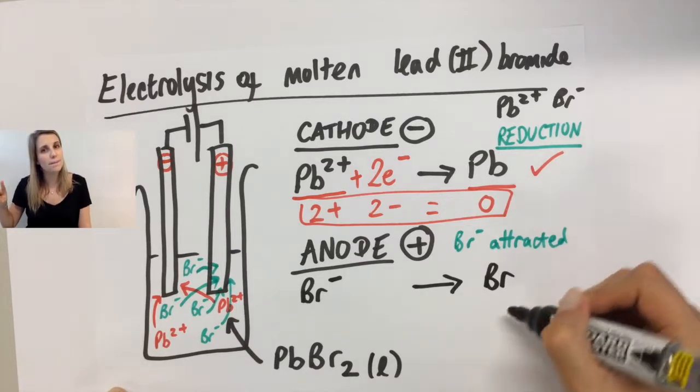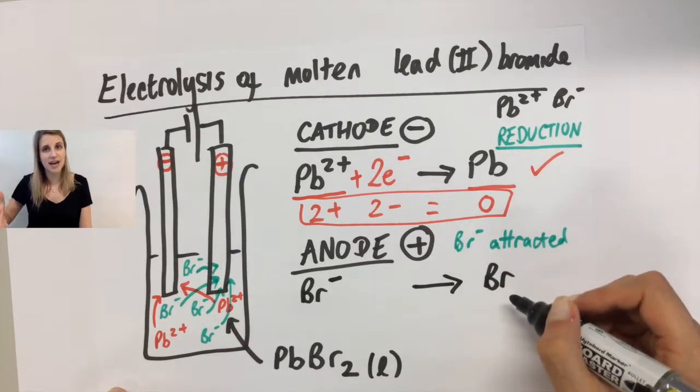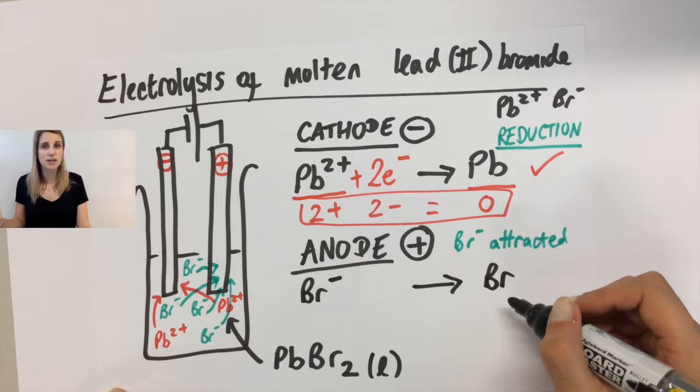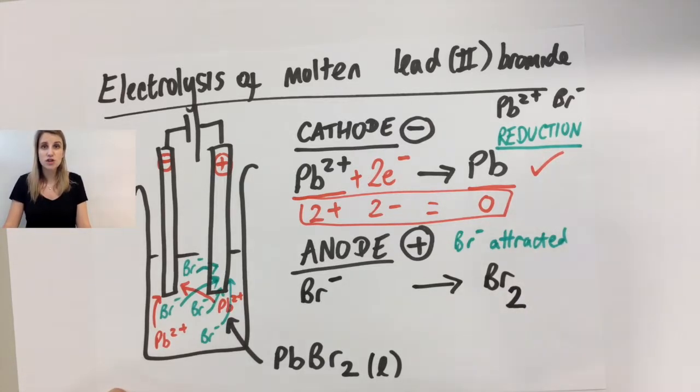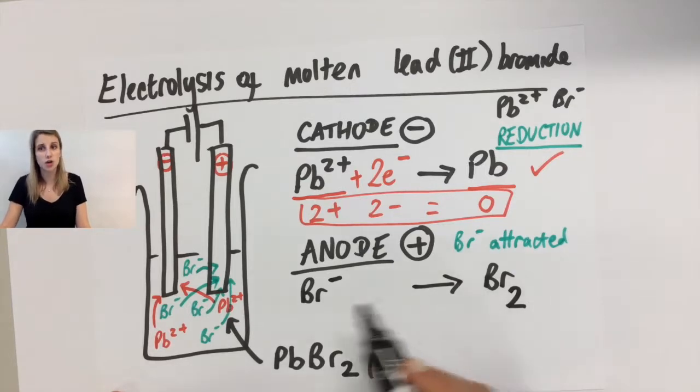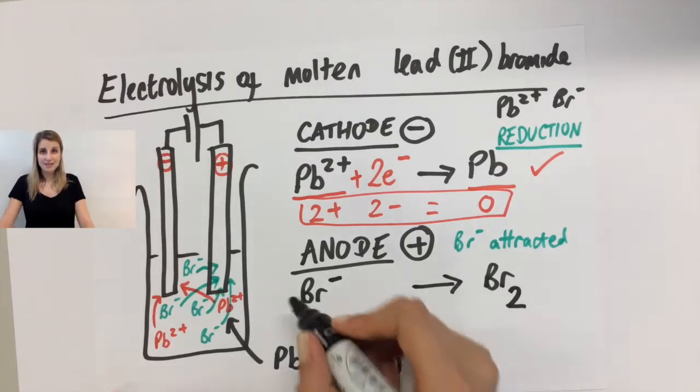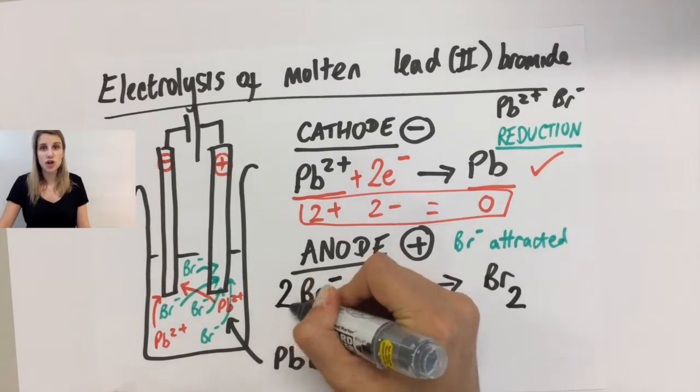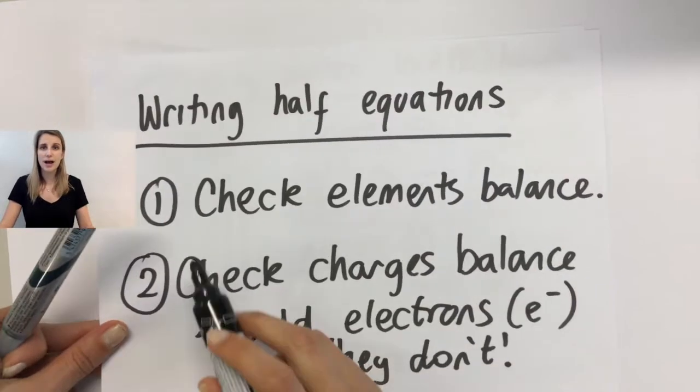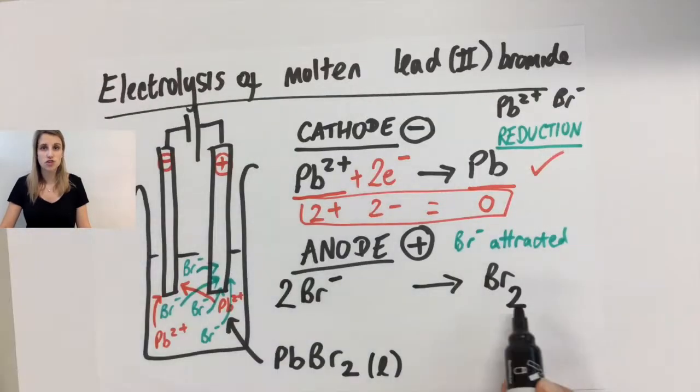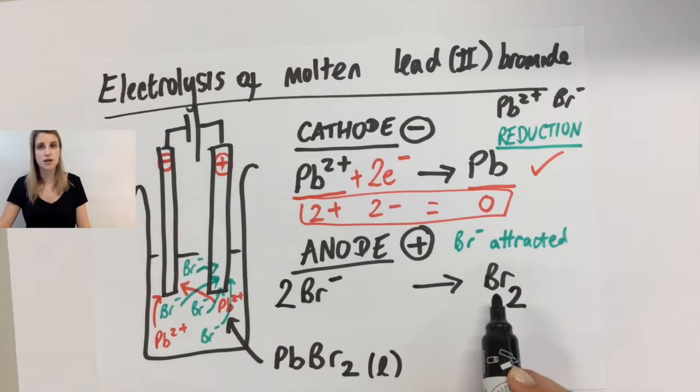But what you need to remember is that all of those halogens, when they exist as elements, they exist as a diatomic element. So really this is Br2. So to balance that, I need to add two in front of the Br-. So in my stages, I've already balanced the elements. So now I've got 2Br- on the left and Br2 on the right. But what I need to do next is I need to balance the charges. So let's check that out.